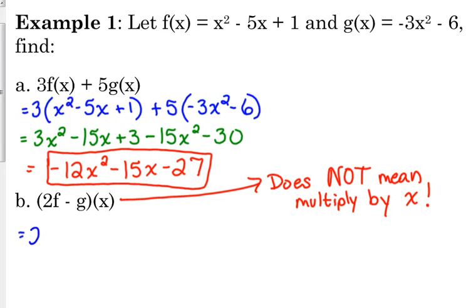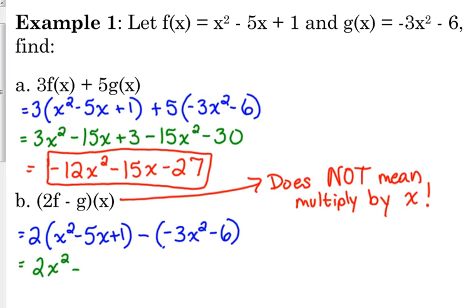So we've got 2 times our f function. Still going to plug that in. This time it's just minus the g function. Now, you may not see a point in putting parentheses here, but you really, really do need to put parentheses here because that negative needs to be distributed to the g of x function. So if we distribute the 2, we get 2x squared minus 10x plus 2. Distribute the negative. That becomes positive 3x squared plus 6.